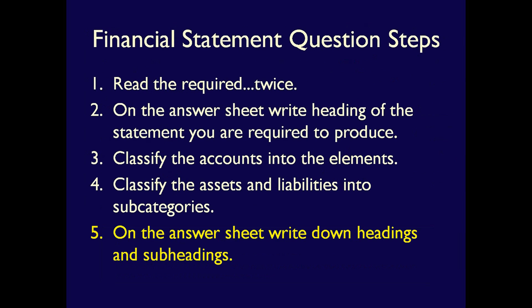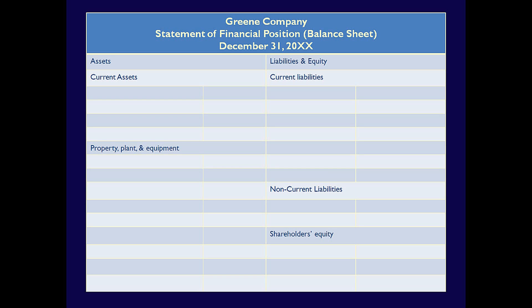Step 5: Whichever statement you're required to produce, write down the headings and subheadings on your answer sheet. Leave ample room to list the accounts under each heading and subheading — this sets up your statement so that it basically becomes a fill-in-the-blank. Note that I've only written down the subheadings I need for this question. I could have written them all down, but that would be a waste of time, and there's never enough time on a test or exam anyway.